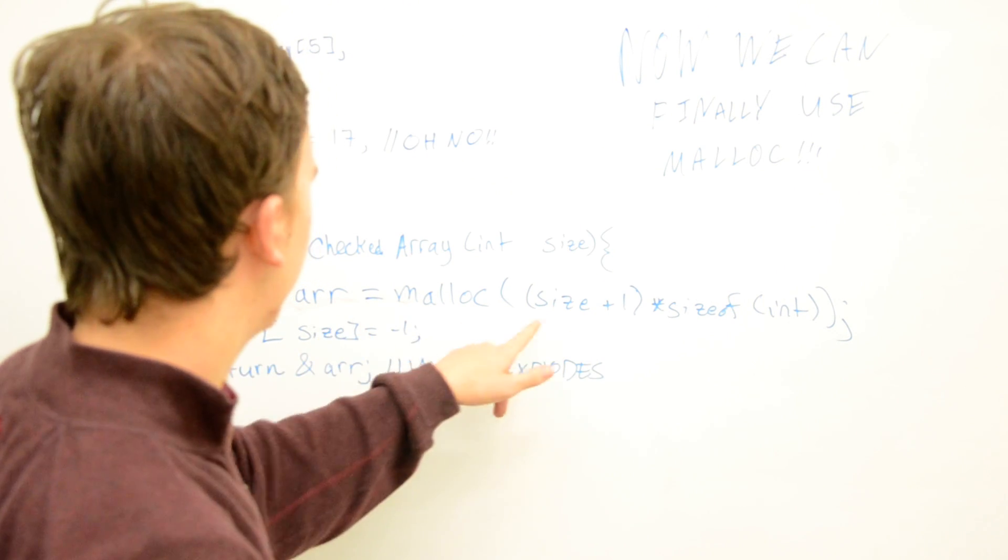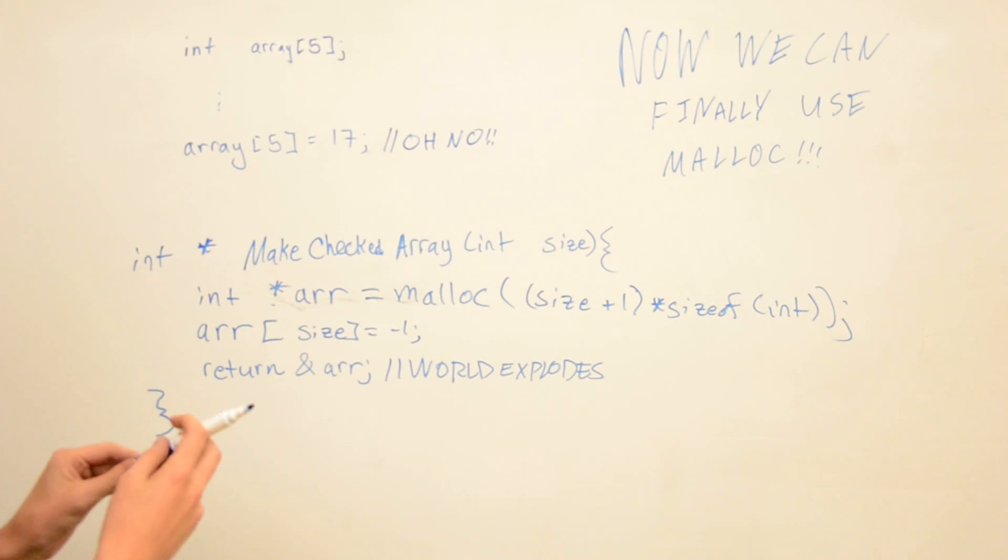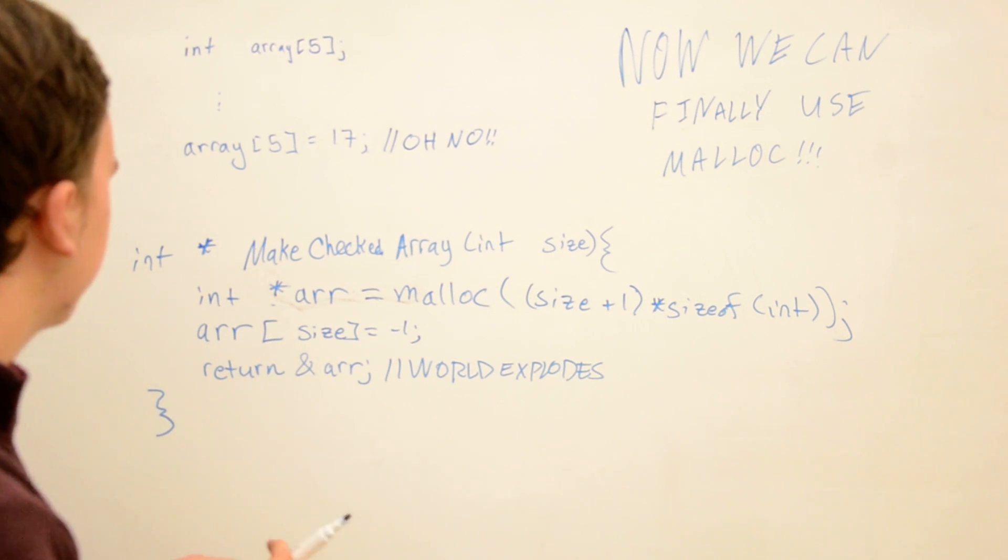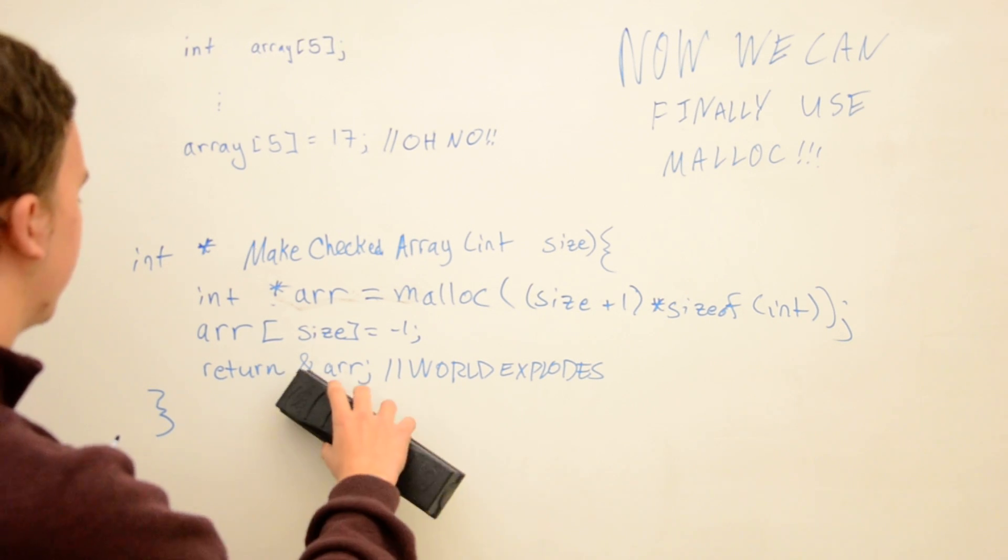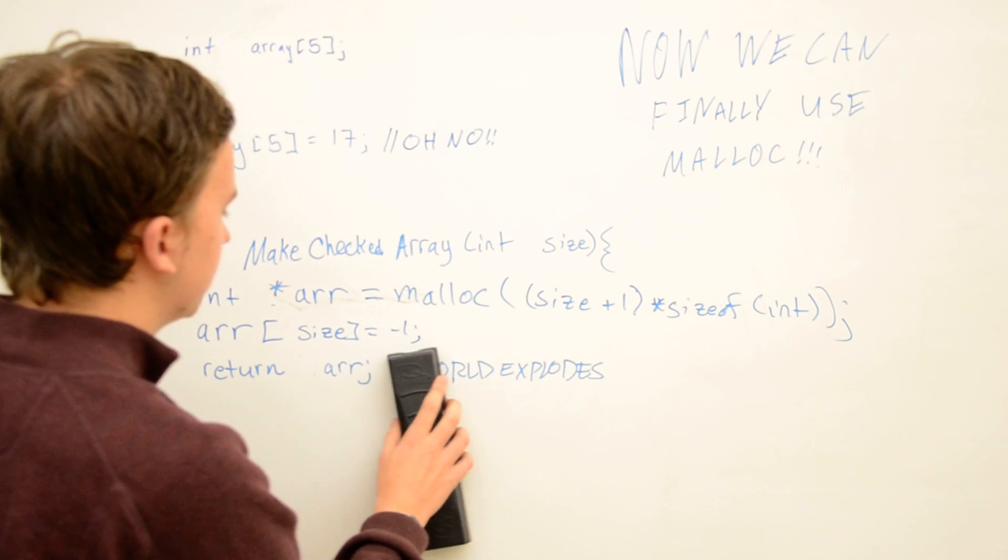Now we have a chunk of memory out in the heap of size size plus one. That's closer to what we want. Now we can access that just like it's an array, because arrays and pointers are essentially the same thing with an offset. And then we don't even have to return the address of this variable. We can just return the variable itself since it's a pointer. And hopefully the world does not explode anymore.